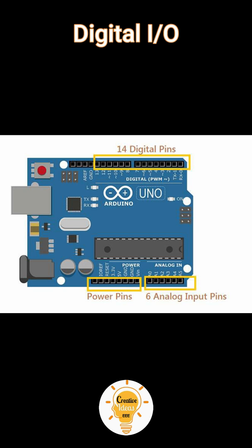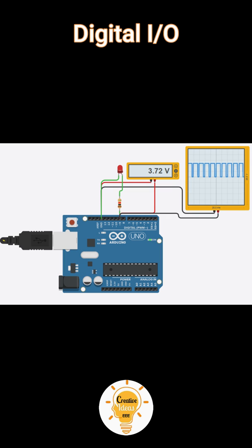Digital I/O: The Arduino UNO board has 14 digital I/O pins. These pins can be configured to work as input digital pins to read logic values, or as digital output pins to drive different modules like LEDs, relays, etc. The pins labeled with a tilde (~) can be used to generate PWM.